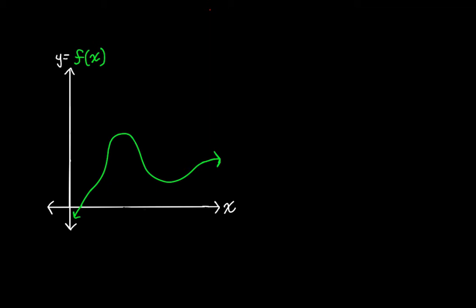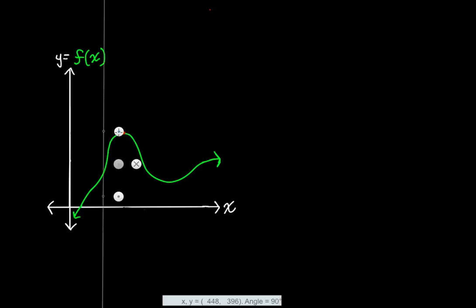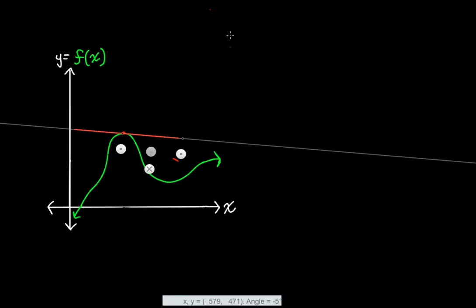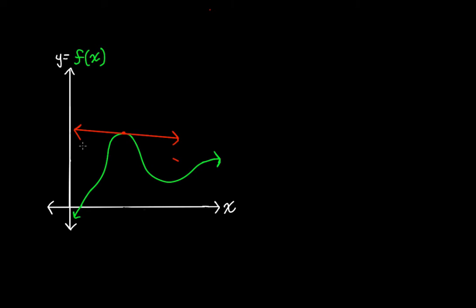Hello. Over the last couple of videos, we've become comfortable with the idea that every point on some function f of x has an instantaneous rate of change that represents the direction of that function at one point. This can be represented with a tangent line. The slope of that tangent line is the instantaneous rate of change at that point, and at this point — which we'll call x1 — it'll have the y-coordinate f of x1. I'm going to call the instantaneous rate of change there, or the slope, f prime of x1.